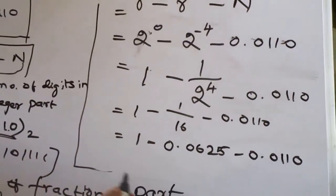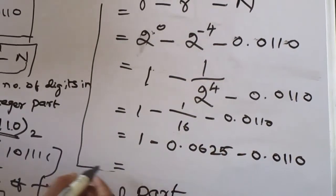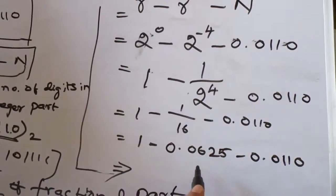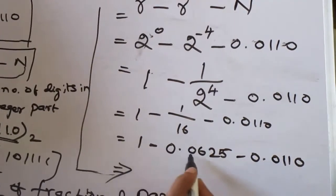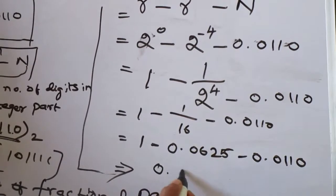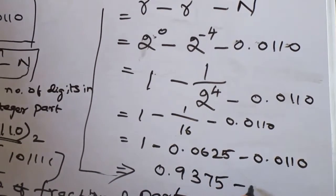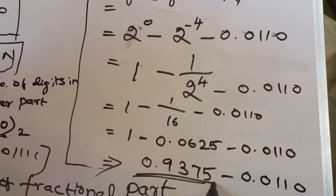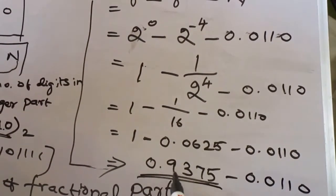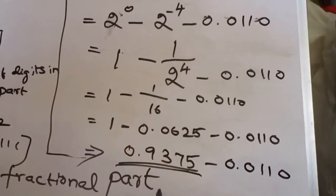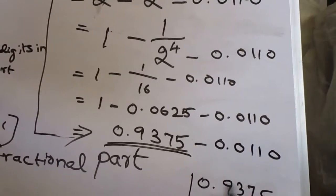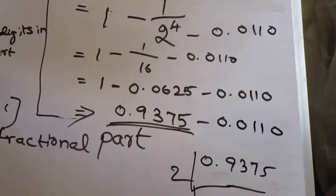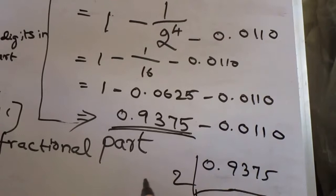I hope you are clear up to this point. Here is the trick: we need to find out this decimal. We subtract normally: 1 minus 0.0625 gives 0.9375, minus 0.0110. However, since it is a floating value, we cannot use the normal conversion method — we cannot handle 0.9375 directly with the standard binary method. So I will show you another method.